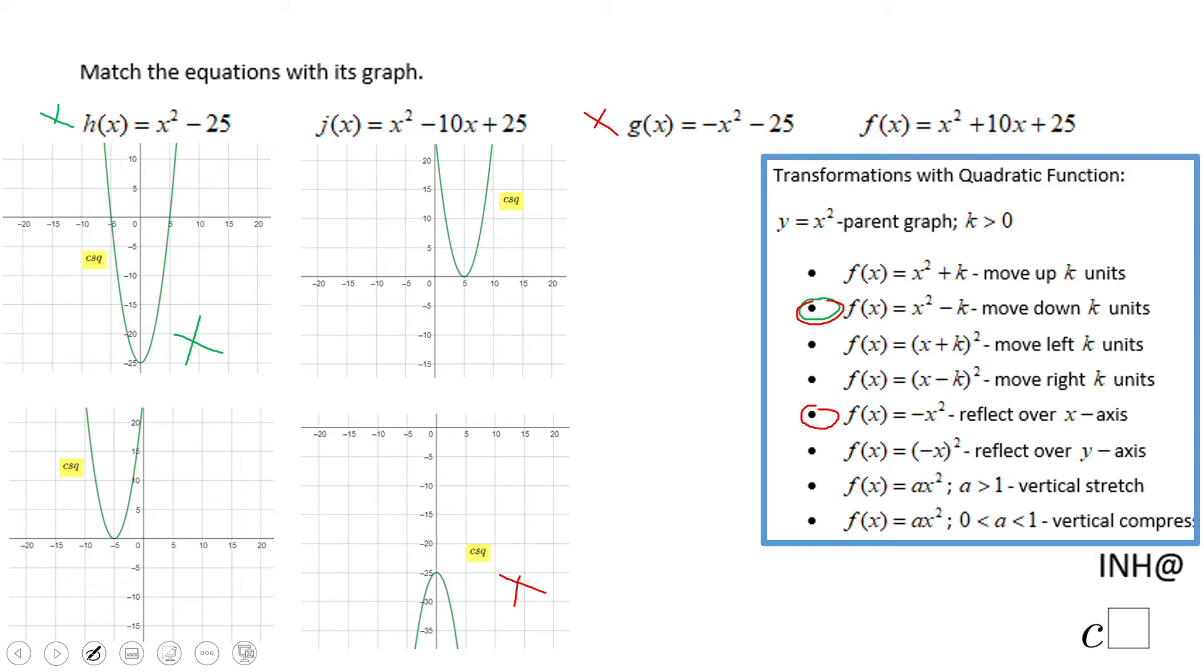We have x² - 10x + 25. This one can be factored out. x² - 10x + 25 will be (x - 5)(x - 5) or (x - 5)².